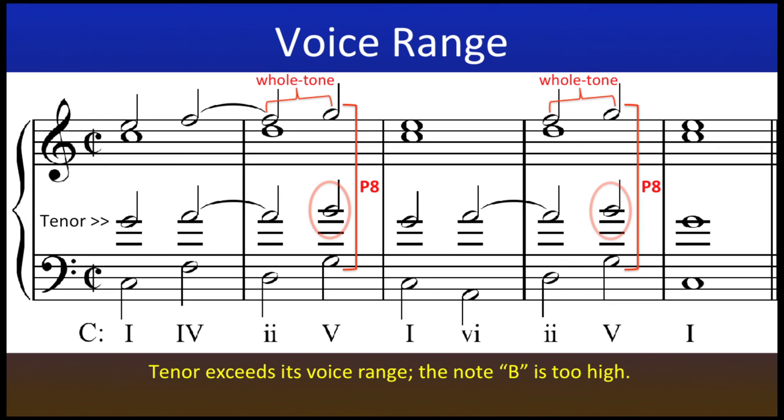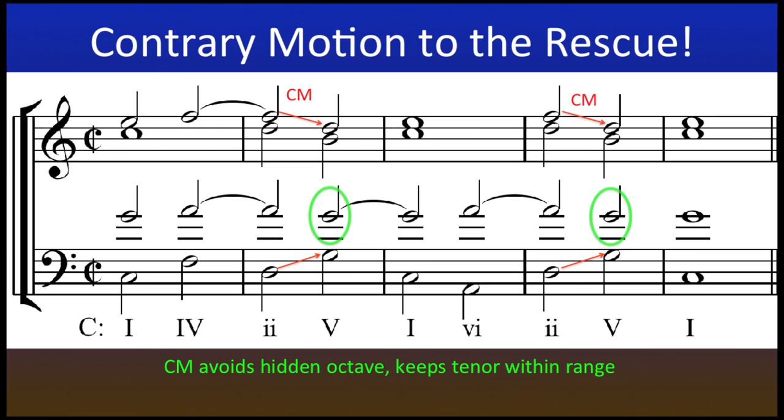Not only that, the tenor voice is forced upwards as far as the note B, which is totally outside his range. Contrary motion between bass and upper voices is therefore necessary in bars two and four, to avoid the hidden octave and also keep the tenor within proper bounds.